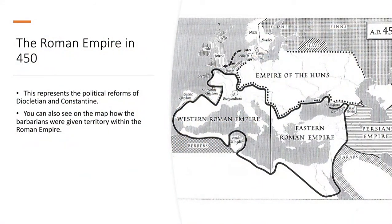Here is the Roman Empire in 450 AD. It was split into two halves based on the reforms of Diocletian and Constantine. You can also see on the map that just before the Western Empire fell, Rome had already ceded territory to European barbarians — the Franks, the Suebi Kingdom, the Visigothic Kingdom, the Vandal Kingdom, and the Burgundians — all Germanic tribes eating away at the empire.